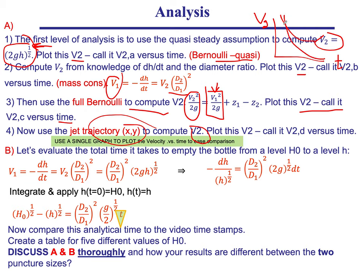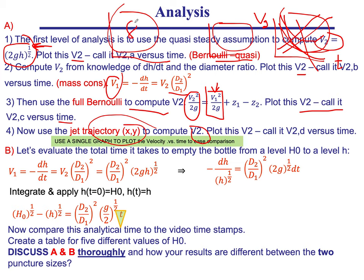Plot all four v2 curves on the same axes — time on one axis, velocity v2 on the other — so we can see which curves cross, which are higher or lower, and whether trends agree. Do this for both the small hole and the large hole. If you want to be very critical, put all eight curves on a single third plot — four in black for the small hole, four in red for the large hole.